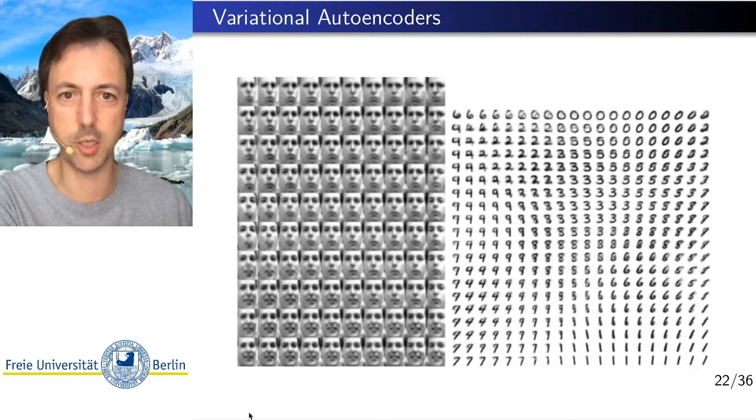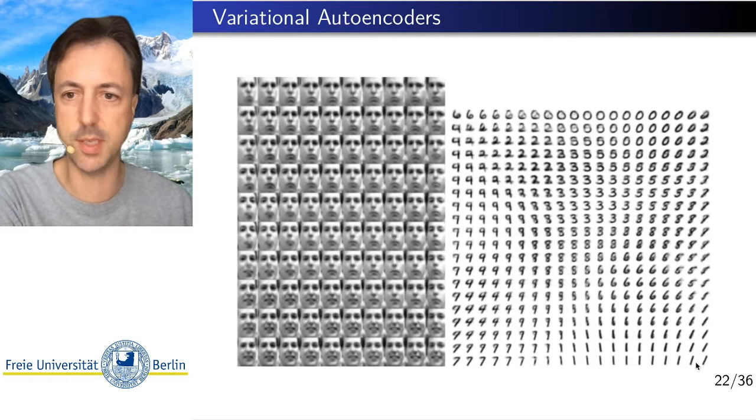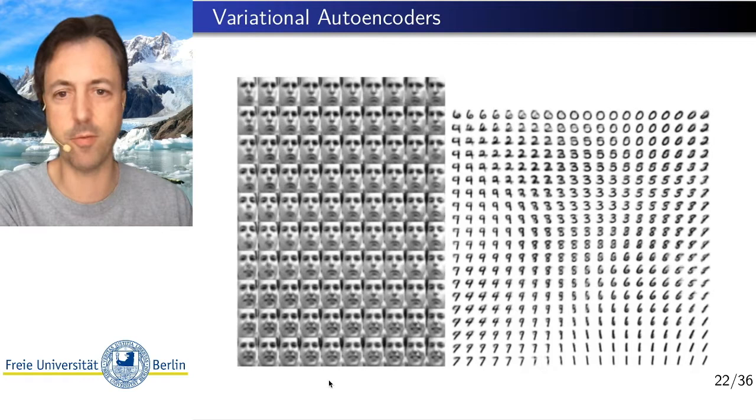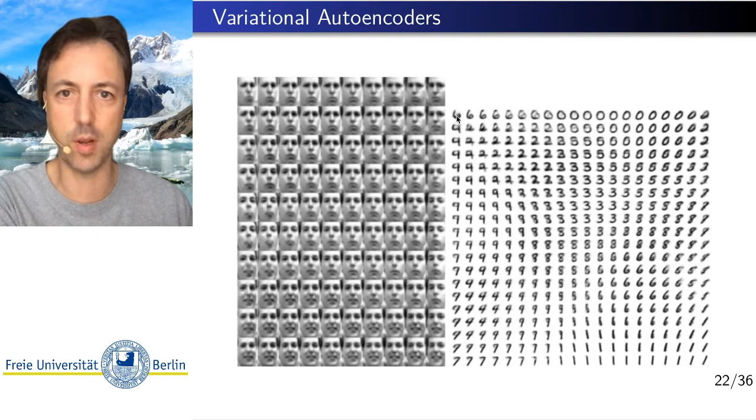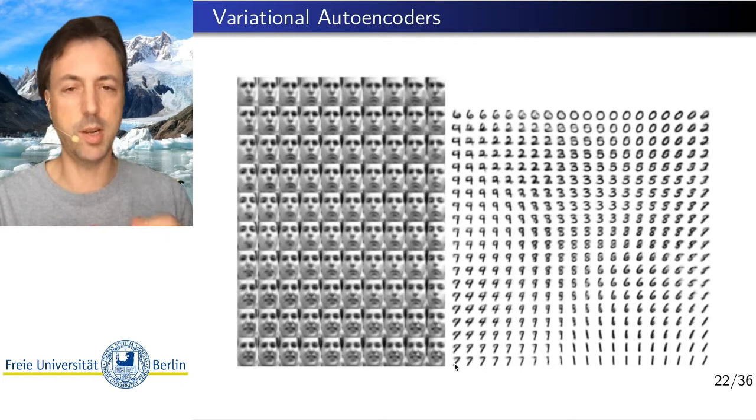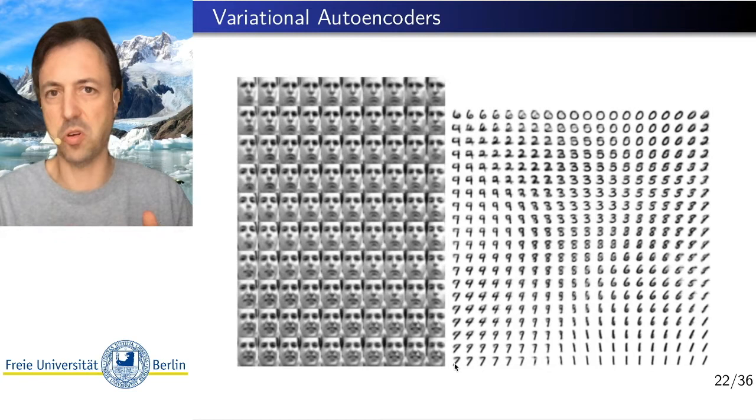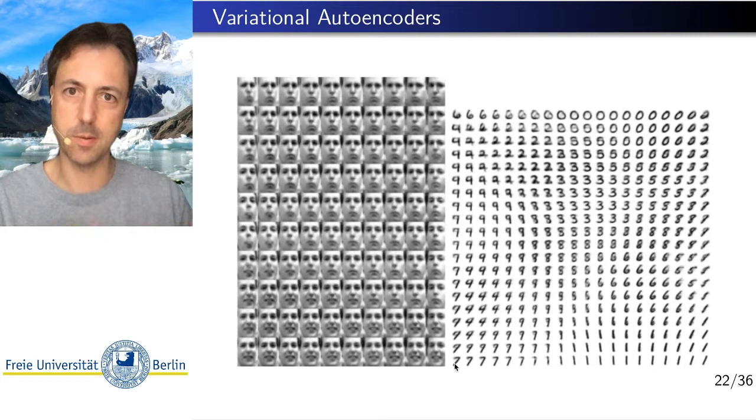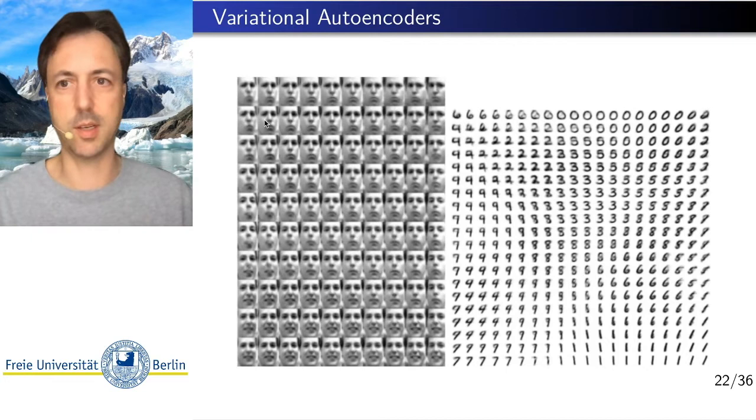So handwritten digits. And what you see here is after the variational autoencoder has been trained, we pick four images from our dataset and put them in the corners of this image here. So these four images map to four latent space vectors. Now if we do a linear interpolation between these four corners, so a convex combination basically between these four points, and then put this into the decoder again and ask which image does it map to.